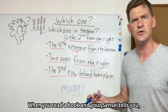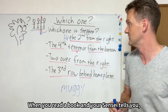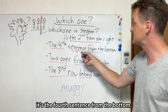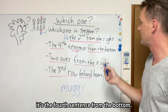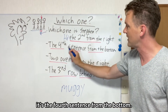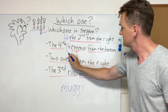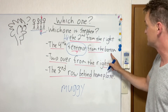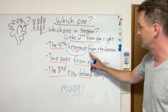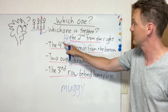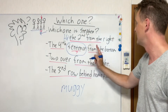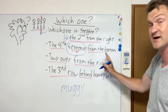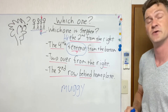When you read a book and your sensei tells you it's the fourth sentence from the bottom — the fourth, 4番目 — sentence from the bottom. 下から4番目の文章. The fourth sentence from the bottom. From the right, from the bottom.